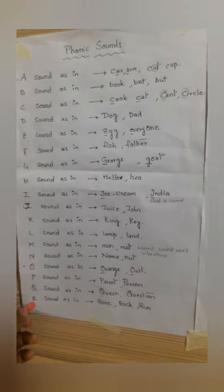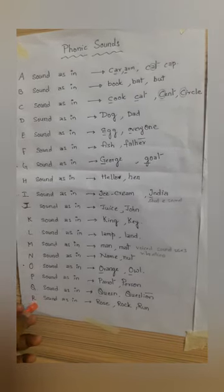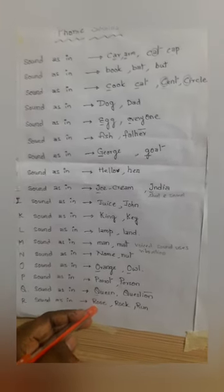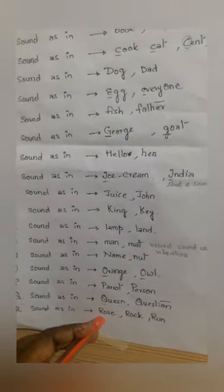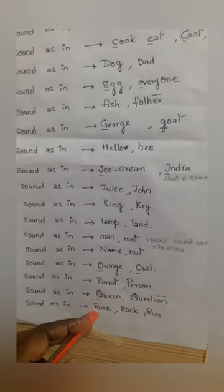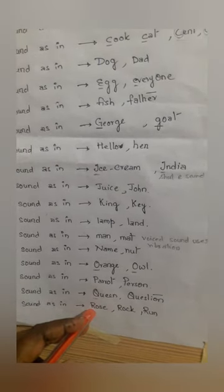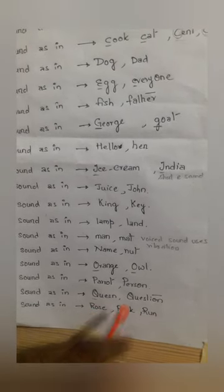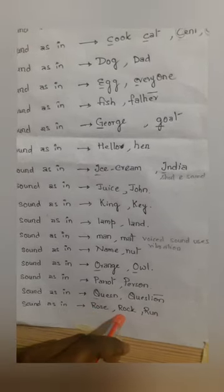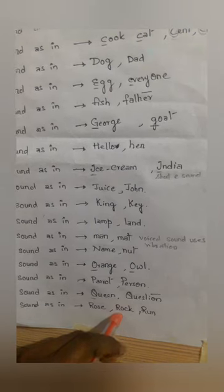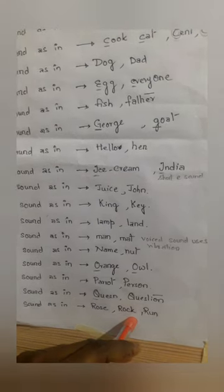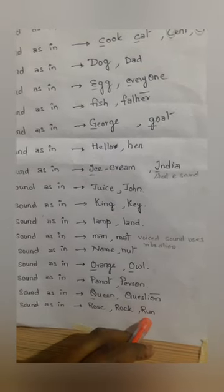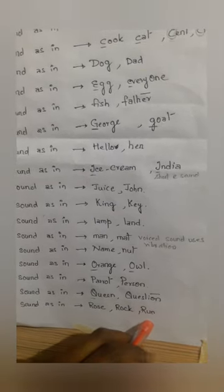Coming to R, the sound — we should roll the R's. Like how we say 'r' as in Rose. It's Rock — R, O, C, K — rock. It's Run — R, U, N — run.